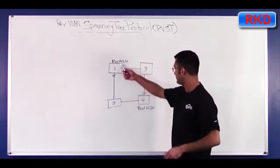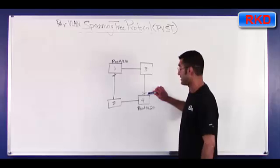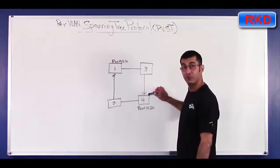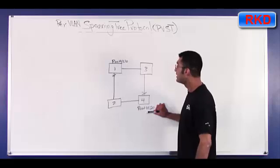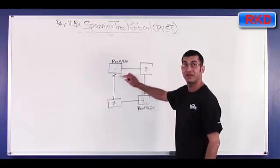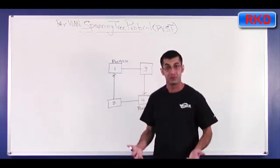So since this is root for VLAN 10, this would be blocking for VLAN 10, but at least VLAN 20 traffic would be flowing through it. And since this is root for VLAN 20, this would be blocking for VLAN 20, but at least VLAN 10 traffic would be flowing through it.